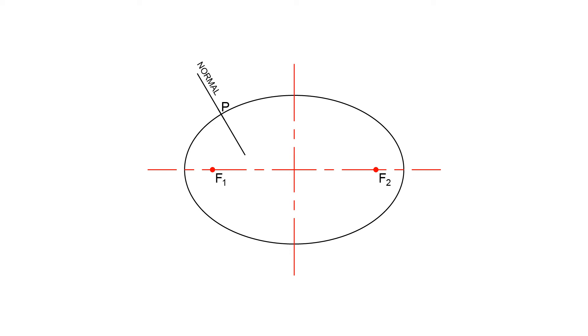Now that the normal is done, let us add a tangent at the same point. A tangent is a line that just touches the ellipse. It is always perpendicular to the normal.